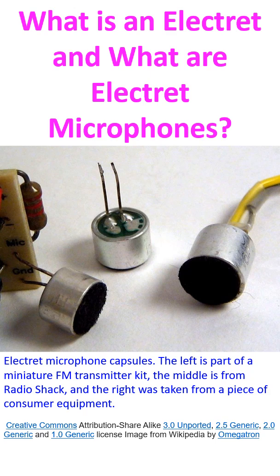Electrets can be produced by heating a material and cooling it in the presence of strong electric fields. They can also be manufactured by embedding excess negative charge in a dielectric using a particle accelerator. An alternate method is to embed charges on the surface using high voltage corona discharges.